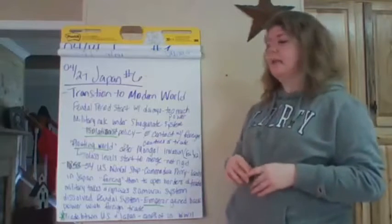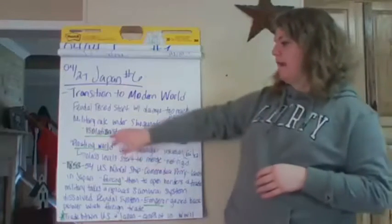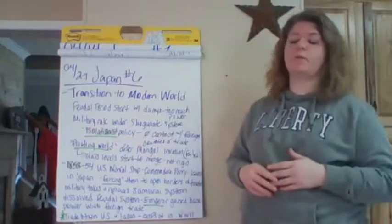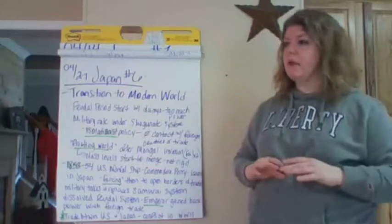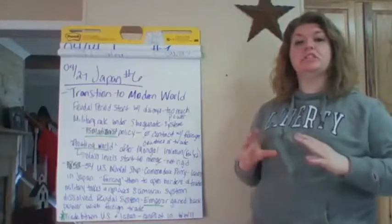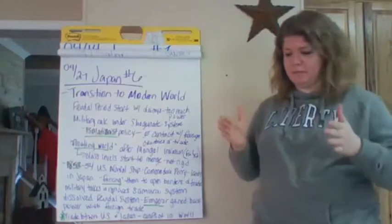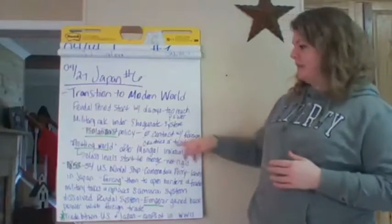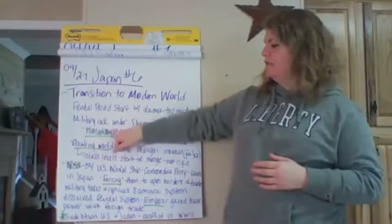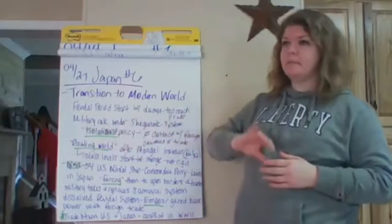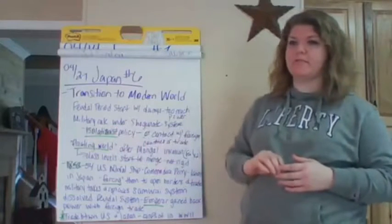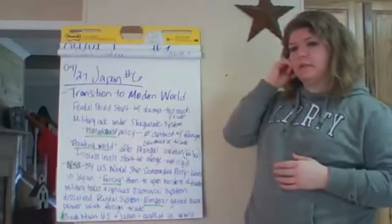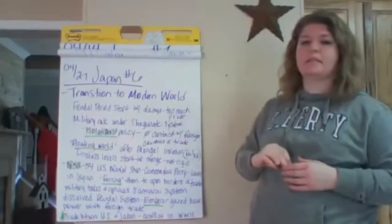Under the shogunate system and military rule in Japan, they adopt a sort of isolationist policy. Isolationism means they don't want foreign nationals coming in or trade and communication with other countries — Japan is their only and primary focus. As this isolationist policy starts to dissolve, that's when we start to see the end of the feudalism period as well.